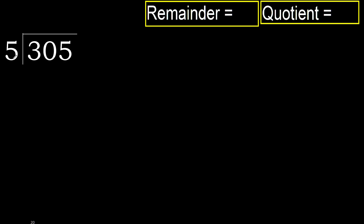305 divided by 5. 3 is less, therefore next — 30 is not less, therefore with 30. 5 multiplied by which number is nearest to 30 but not greater?